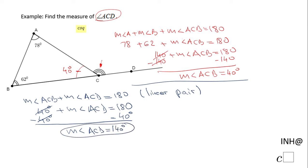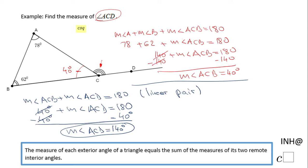So this is the first method where we find the third angle in the triangle and then notice those two angles are a linear pair. However, another method uses this theorem that you see down here, the exterior angle theorem, which says the measure of each exterior angle of a triangle equals the sum of the measures of its two remote interior angles.